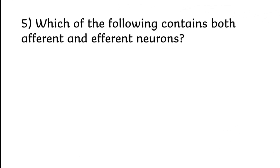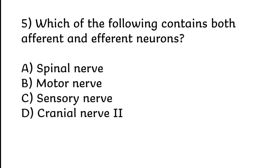Which of the following contains both afferent and efferent neurons? Spinal nerve, motor nerve, sensory nerve, or cranial nerve two. Correct answer is option A, spinal nerve.